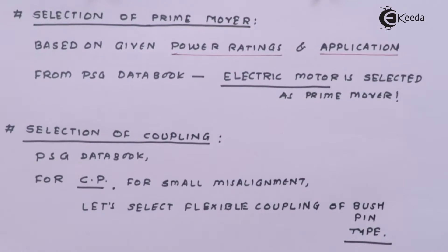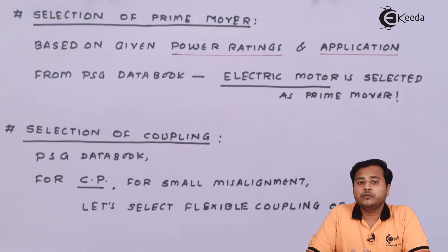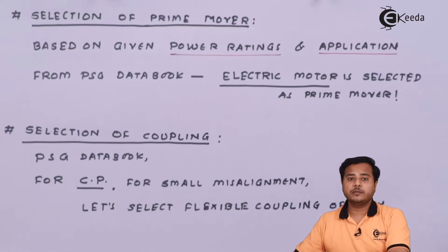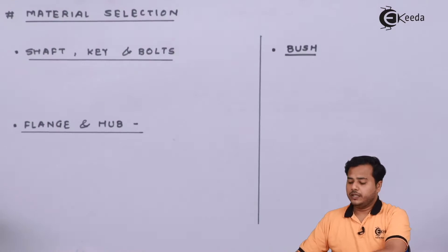So here we come to know that the problem is going to be based on the bush pin type coupling. Here before we had no clue that this particular thing is going to be like this. So based on the given data, based on the given parameters, requirement, prime movers and the data book, we can select a proper prime mover and the proper coupling. So the coupling selected so far is the flexible coupling which is bush pin type coupling.